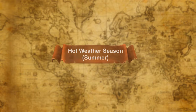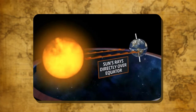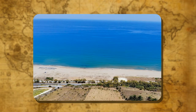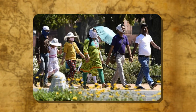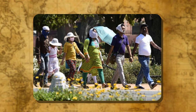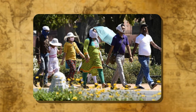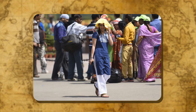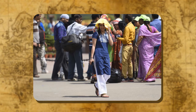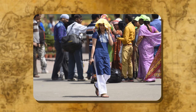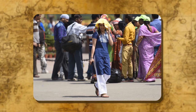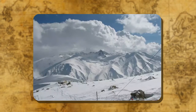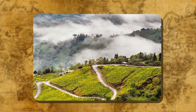Hot weather season (Summer): As the sun's rays fall on the equator in the third week of March, heat starts reaching the northern hemisphere. The places close to the sea still remain moderate, but the areas in the north, such as Chandigarh or Delhi, have temperatures of about 30 degrees Celsius. By the end of May, the temperature goes up to 38 or 40 degrees Celsius. Hot and dry winds called Loo blow during the day. However, hill stations like Shimla, Kullu, Manali, Kashmir and Darjeeling remain cool during this period.